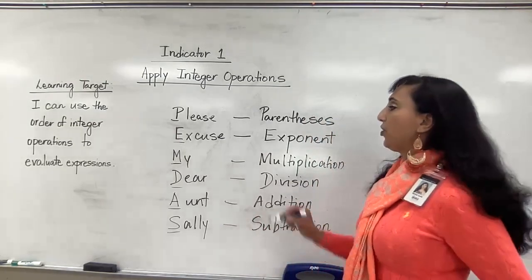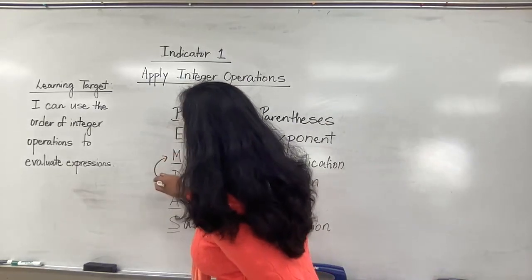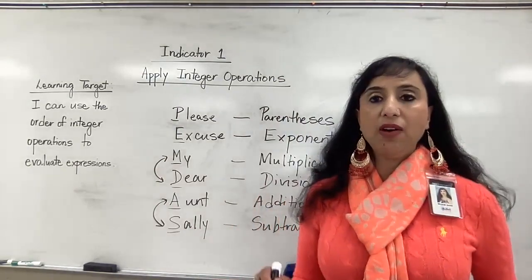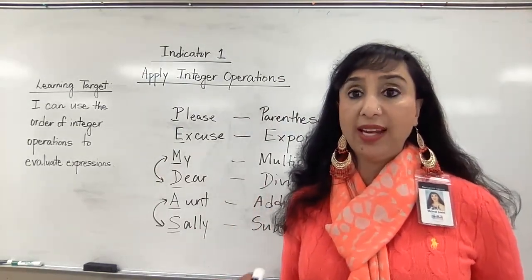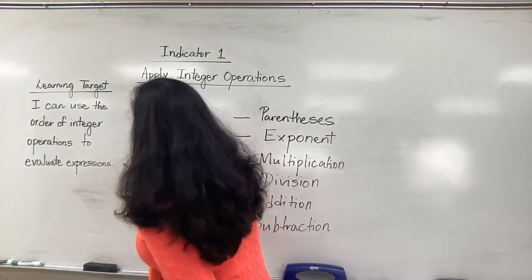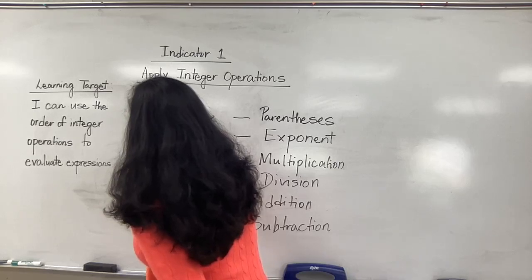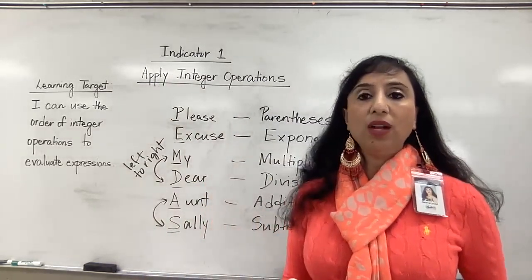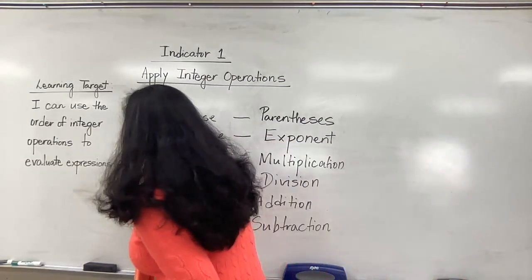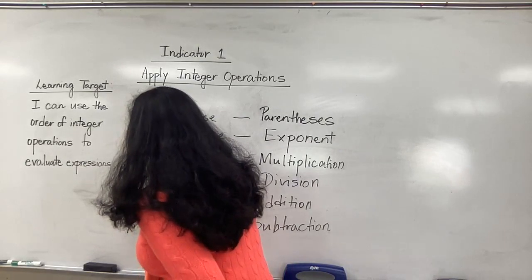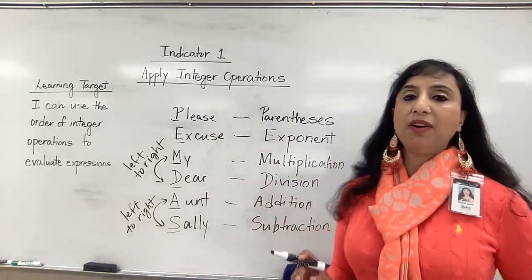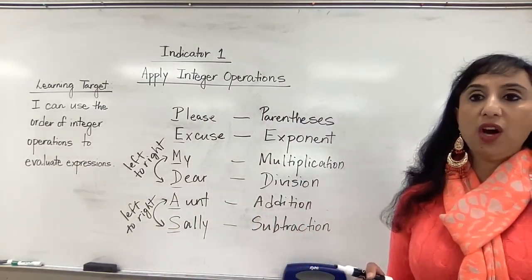You also have to remember that multiplication and division go together — if you only have multiplication and division left in your problem, you go left to right. Same thing: if you only have addition and subtraction left in your problem, you go left to right. We have to always follow this order of operations whenever we are solving problems with integer operations.